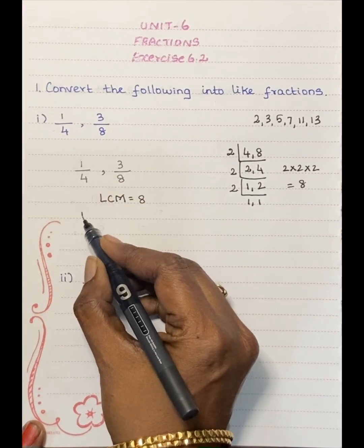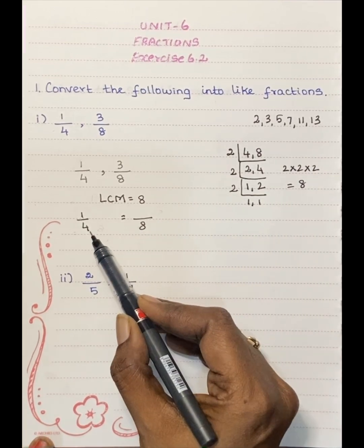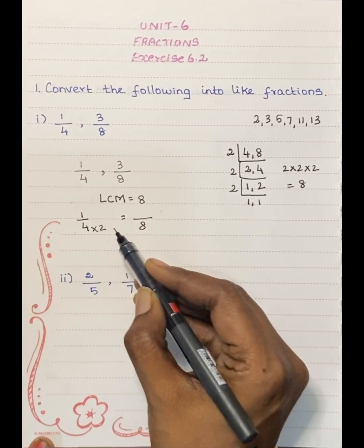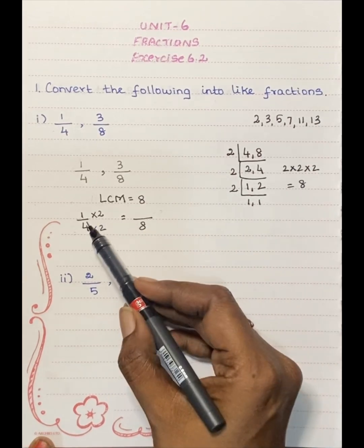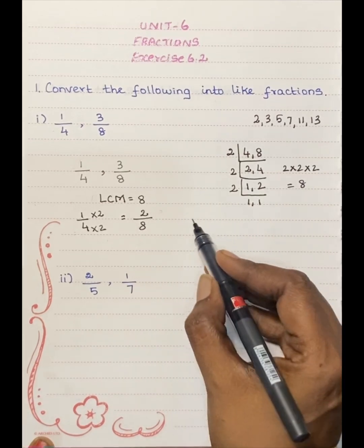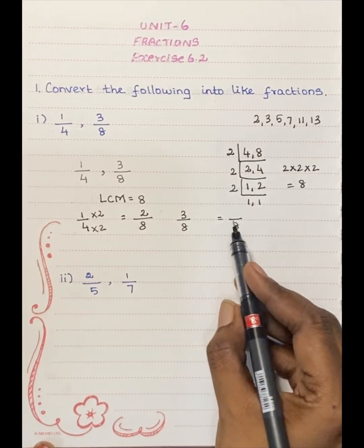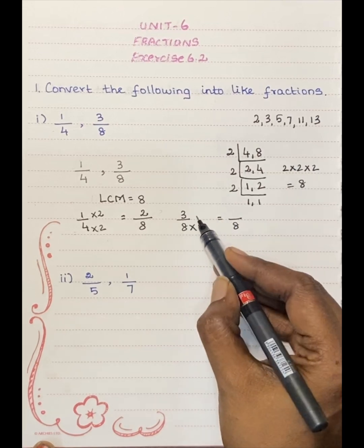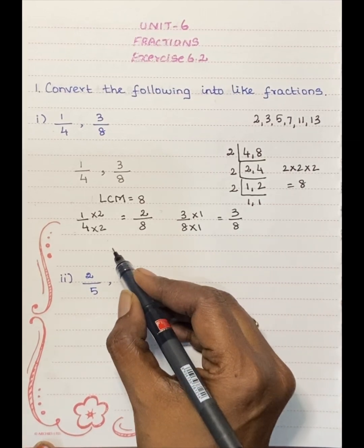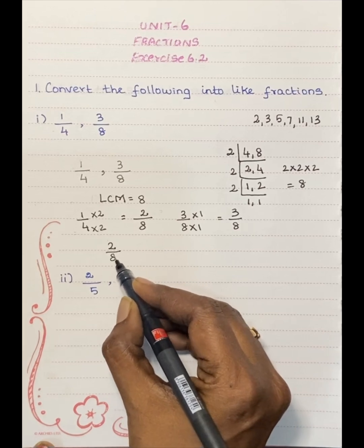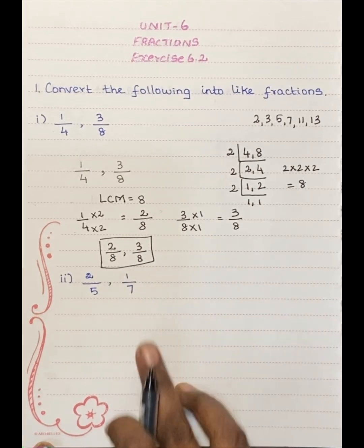Now, 1 by 4 is equal to something over 8. Since 4 tables — 4 twos are 8 — we multiply the numerator and denominator by 2. For 3 by 8, the denominator is already 8, so we multiply by 1. Converting unlike fractions to like fractions.